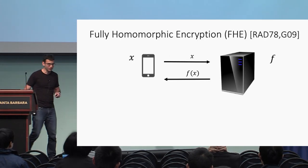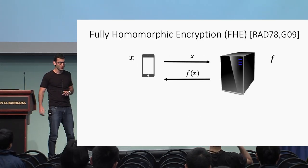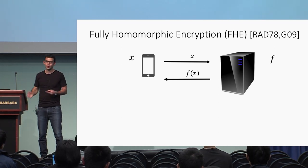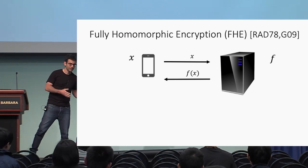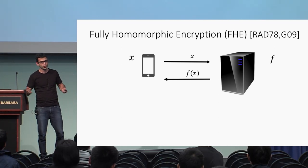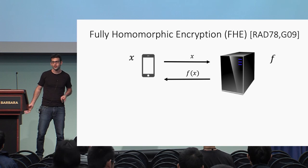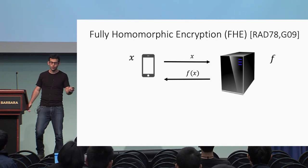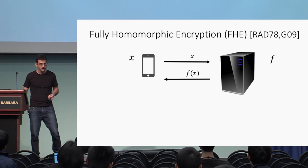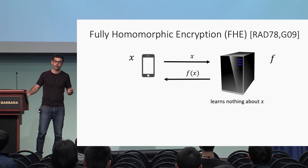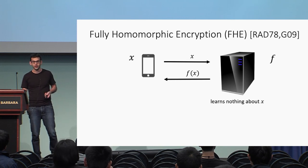Let me start by talking about classical fully homomorphic encryption. In this case we have a weak client that wants to use the computational power of a strong server to compute some function. The client has input x and it wants to get f of x, and the restriction is that we don't want the server to learn anything about the input x.